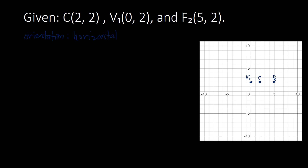Since we have the center and the orientation, we can now look for A. Our A is the distance from the center to a vertex. Counting the number of units from center to vertex, we get 2. So A equals 2, and A squared equals 4. What we will need in writing our standard equation is A squared.